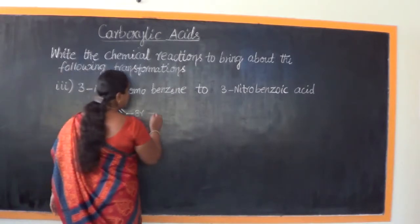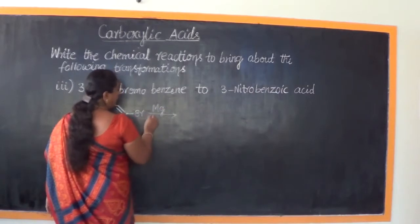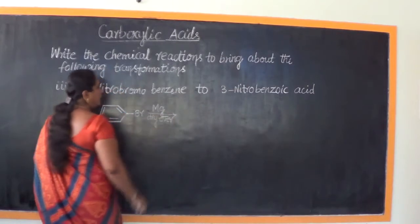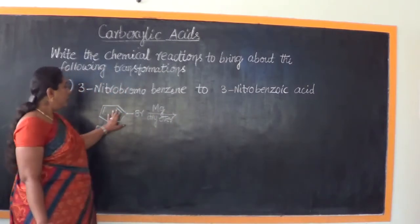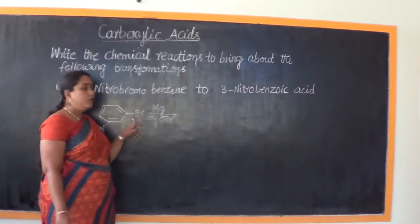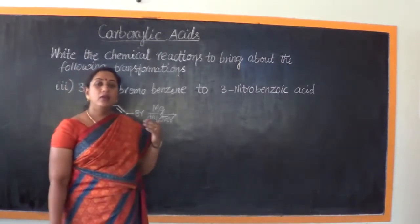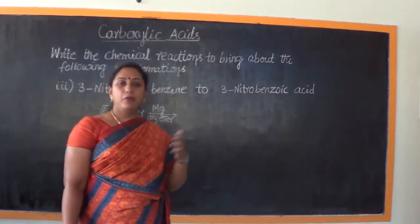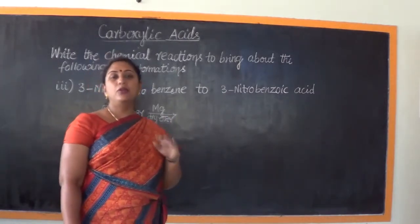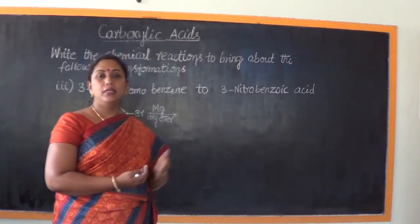Now let us treat this compound with magnesium in dry ether. We will obtain the nitro group still attached to the benzene ring, and Mg will also take an attachment to the benzene ring. The structure will look like phenylmagnesium bromide — with a nitro group at the third position. It becomes the structure of a Grignard reagent.